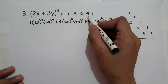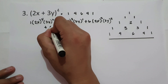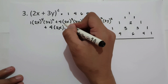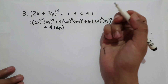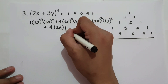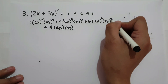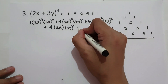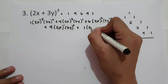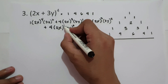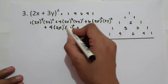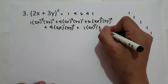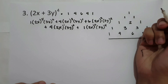Then 4 will be the coefficient of the fourth term, times 2x raised to 1 — going 4, 3, 2, 1 — and 3y raised to 3, going from 2 to 3. Plus the last coefficient 1, times 2x raised to 0 — going 4, 3, 2, 1, 0 — and 3y raised to 4. Now let us simplify our answer.